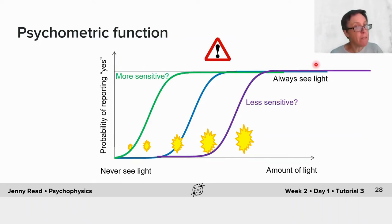You might imagine that you could deduce something about how sensitive an observer is to light from the position of this psychometric function. The observer whose curve is shown in green here, you might think, is more sensitive to light because they're reporting seeing light at lower light levels, whereas this purple subject seems to be less sensitive.